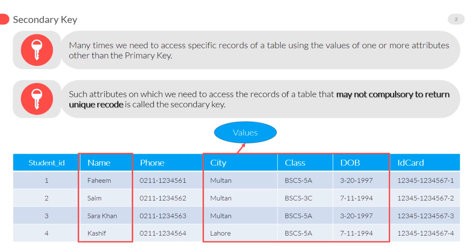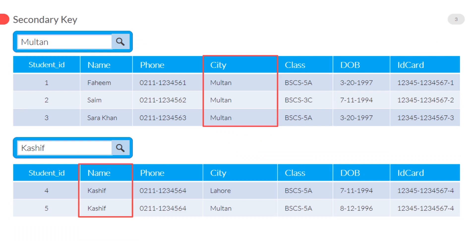In a scenario where more than one record is required — for example, we want to see how many of our students belong to the city of Multan — in that case we will access those records of the student table that contain Multan in their address. So in this situation, more than one record is possible. In this case, the city will be called a secondary key, since we are accessing records on the basis of its value.